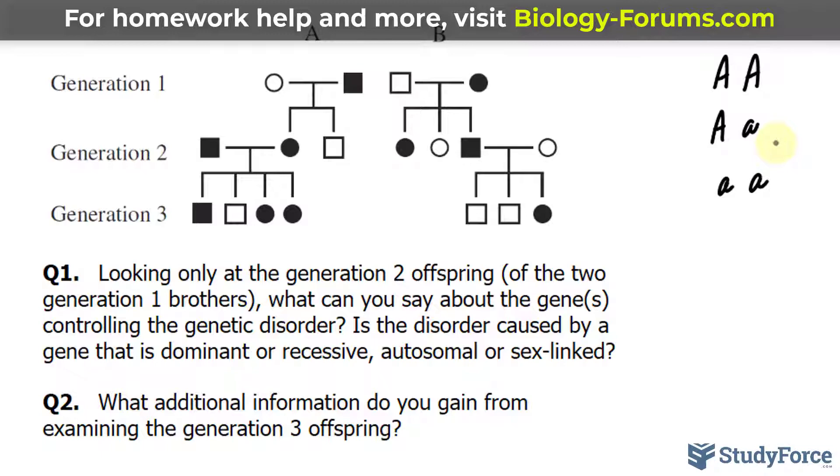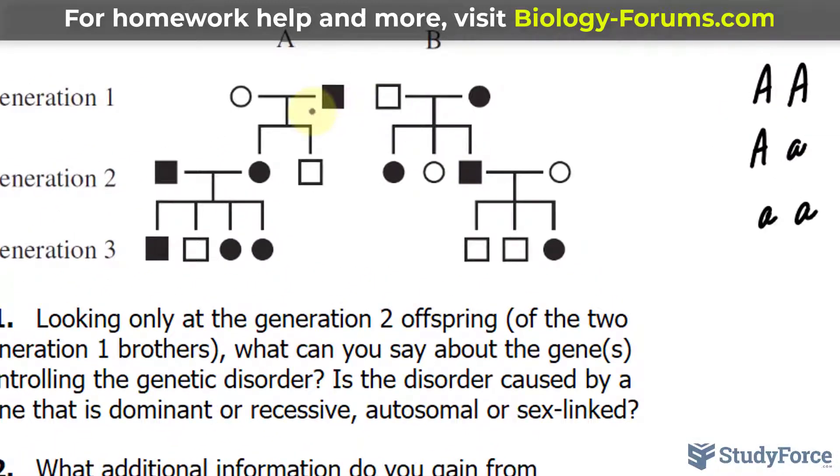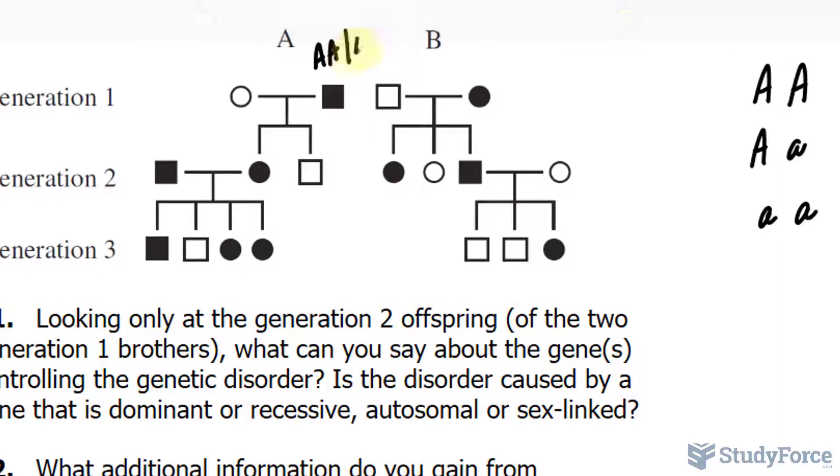That being said, this brother is either homozygous dominant or heterozygous - we don't know yet. This brother, given our initial assumption, would be little a little a. Looking at lineage B, if this brother is little a little a and he marries a woman with the genetic disorder, that means either this woman is capital A capital A or heterozygous.